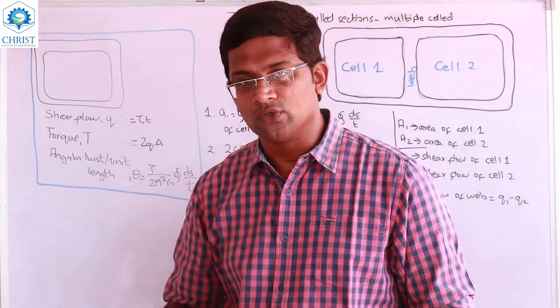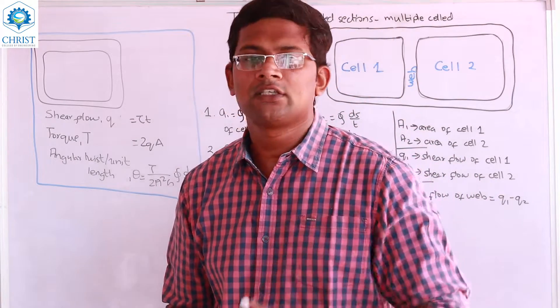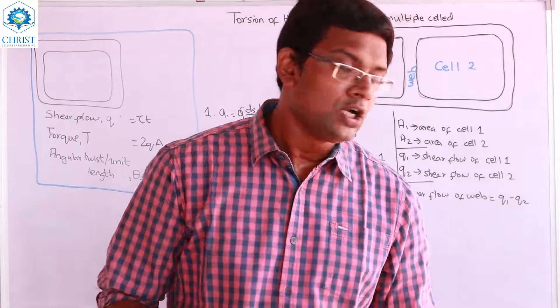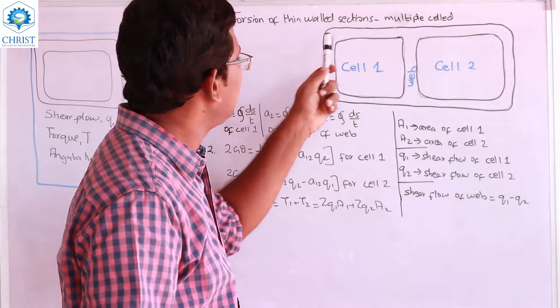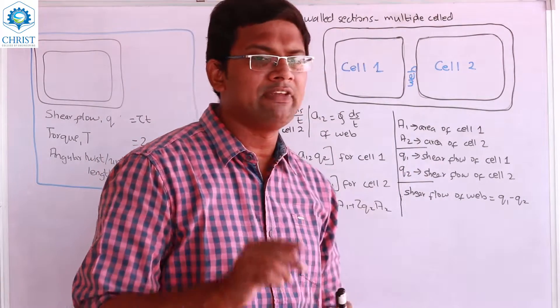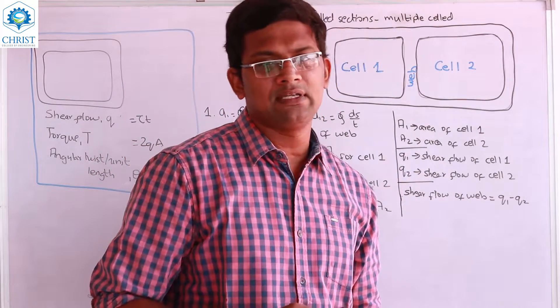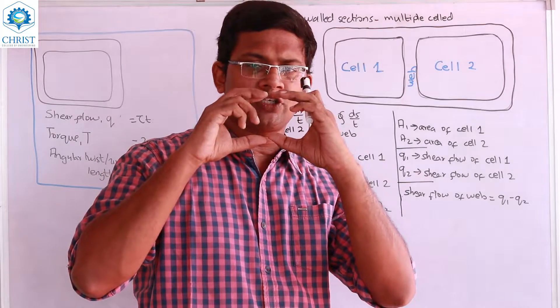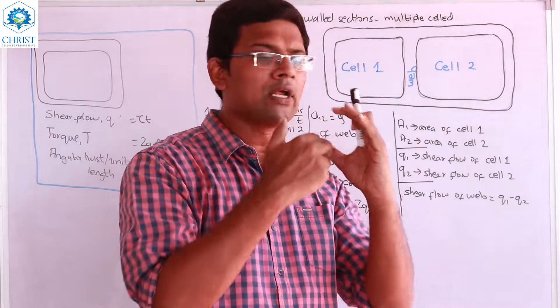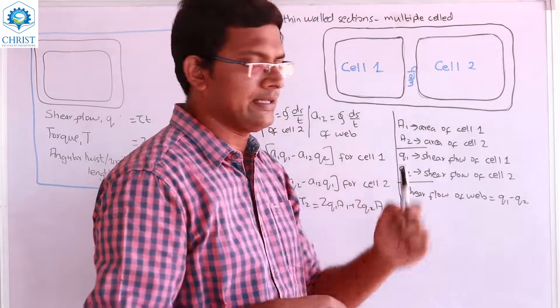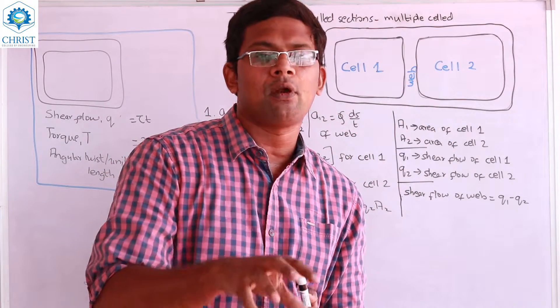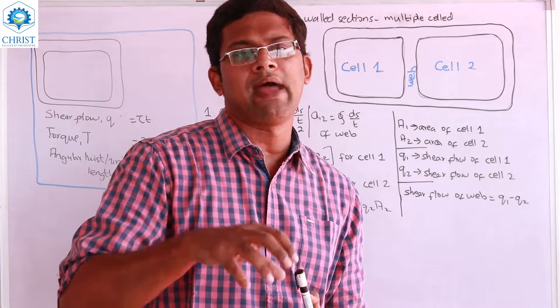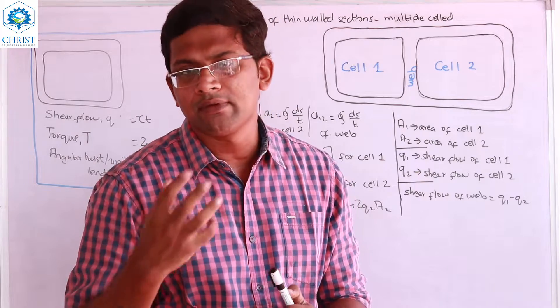Now we will talk about torsion of thin-walled sections with multiple cells. There are many openings in the cross-section, and there are many problems involving torsion and angle of twist.